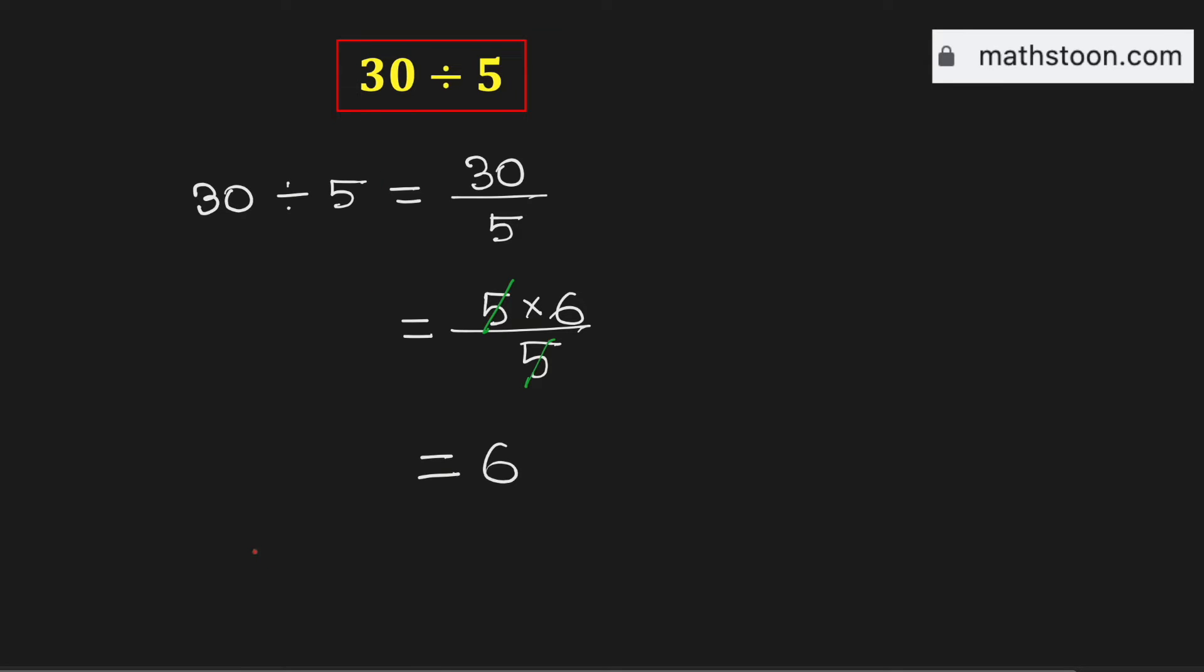Therefore 30 divided by 5 is equal to 6.